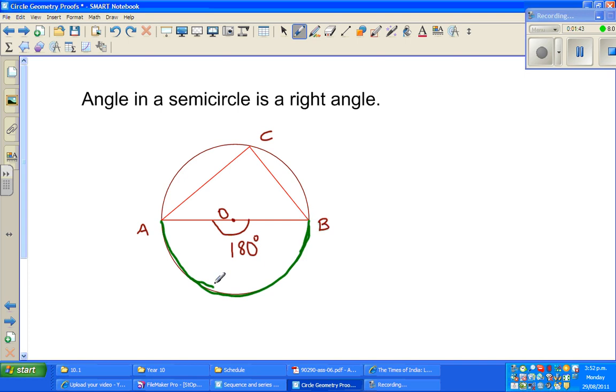This arc AB subtends angle AOB, which is a straight angle at the center, and the same arc subtends angle ACB on the remaining half, which is the other semicircle. This is 180 degrees. This has to be 90 degrees because this has to be half.